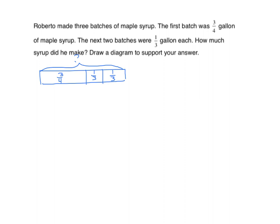Now we need to find the sum of those numbers, so let's write an expression: three-fourths plus one-third plus one-third. I noticed that two of my fractions have a common denominator, so it's going to be best to simplify that portion of the problem first. So now we have three-fourths plus two-thirds. There are a number of strategies for finding like denominators — using any procedure we can find that the common denominator is twelve.